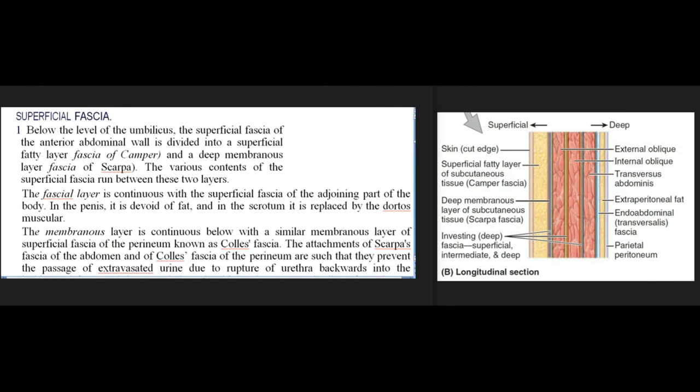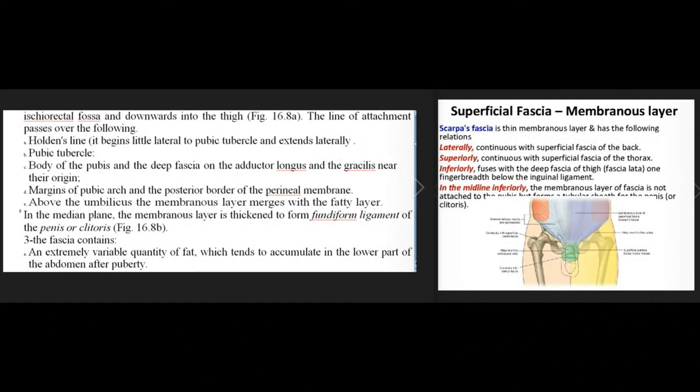Superficial fascia. Below the level of the umbilicus, the superficial fascia of the anterior abdominal wall is divided into a superficial fatty layer, fascia of Camper, and a deep membranous layer, fascia of Scarpa. The various contents of the superficial fascia run between these two layers. The fatty layer is continuous with the superficial fascia of the adjoining parts of the body; in the penis it is devoid of fat, and in the scrotum it is replaced by the dartos muscle. The membranous layer is continuous below with a similar membranous layer of superficial fascia of the perineum known as Colles' fascia. The attachments of Scarpa's fascia of the abdomen and of Colles' fascia of the perineum are such that they prevent the passage of extravasated urine due to rupture of the urethra backwards into the ischiorectal fossa and downwards into the thigh.